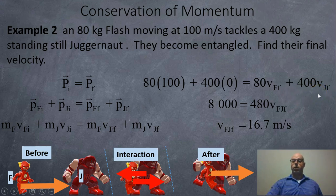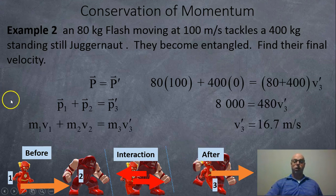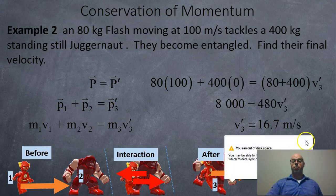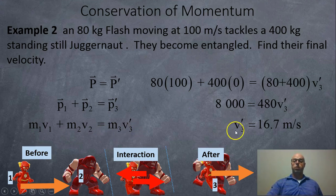Since they're stuck together, they have the same final velocity, so we add the total mass: 480 kg × V_FJF, and we get 16.7 meters per second. Using the prime notation instead: M1V1 + M2V2 = M3V3′, treating the stuck-together pair as one combined object. Plugging in the same numbers gives the same answer.